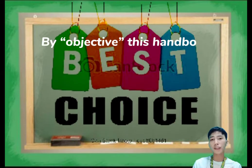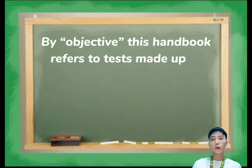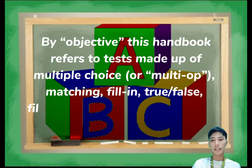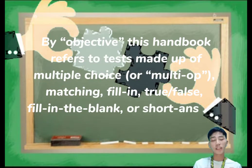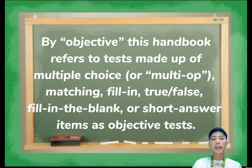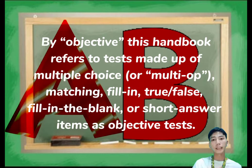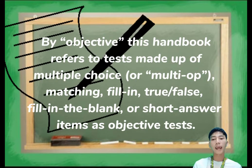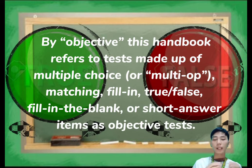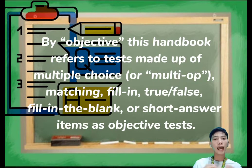Closed answer or objective tests are direct-to-the-point answers where you can choose between given choices. By 'objective,' this refers to tests made up of multiple choices, matching type where students draw a line to match column A to column B, fill in the blank, and true or false — where a brief explanation may be required. Short answer items are also a type of objective test.